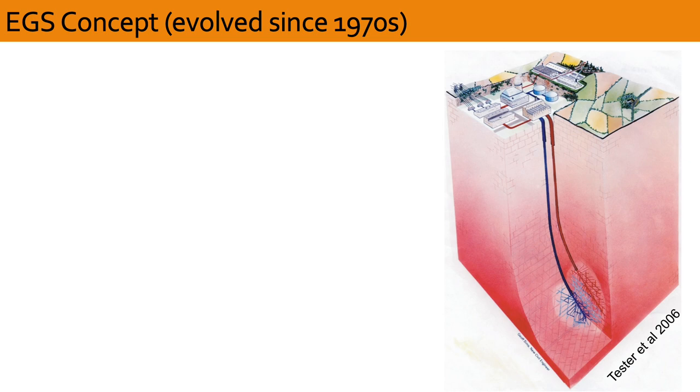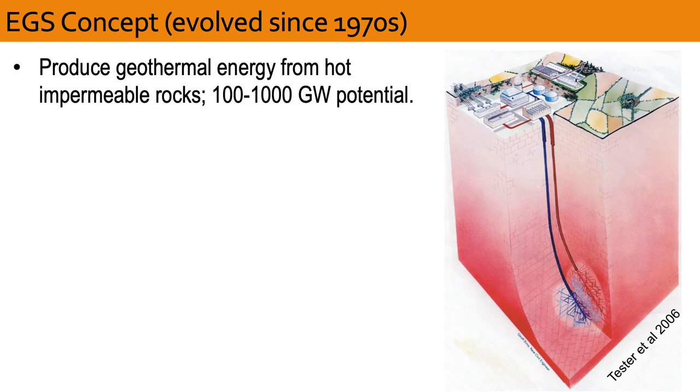EGS is a concept that first emerged in the early 1970s, having been developed by scientists and engineers working at the Los Alamos National Lab. The graphic on the right captures the essential elements. The idea is to produce power from hot and permeable rocks. And various resource estimates suggest the possibility of producing between 100 and 1,000 gigawatts of electricity in the United States alone.